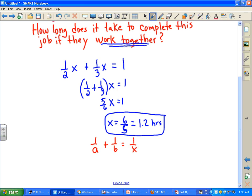So you're gonna have a plus b over ab is equal to one over x. So x, the time it takes working together, is always the product of the two divided by the sum.